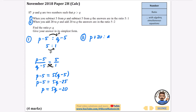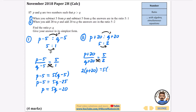For the second part, when you add 20 to p and 20 to q, they're in the ratio 5 to 2. Using the same pattern, (p + 20) divided by (q + 20) equals 5 divided by 2. Cross-multiplying: 2(p + 20) = 5(q + 20). Expanding: 2p + 40 = 5q + 100. Subtracting 40 from both sides gives 2p = 5q + 60.